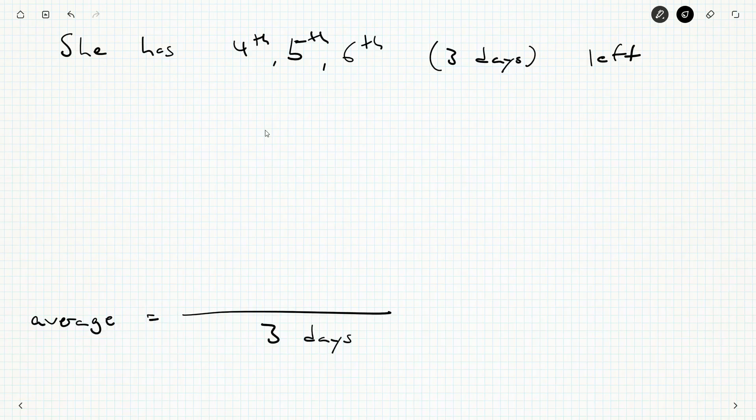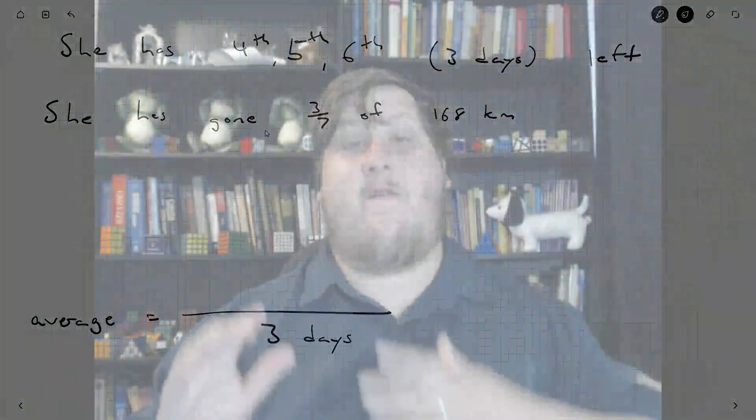Well, they tell us in the question she has gone three-sevenths of the total of 168 kilometers. Now we could do one of two things. We could figure out three-sevenths of 168, which is 72 kilometers. I did that by multiplying 24 by 3. We could subtract it from the total 168, and that's how much she has left to do. That's one way to do it.